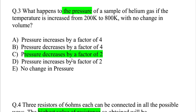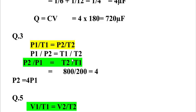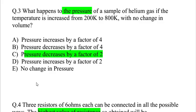The pressure increases from 200 Kelvin to 800 Kelvin. At constant volume, P1 over T1 equals P2 over T2. So P2 over P1 equals T2 over T1, which equals 800 over 200 equals 4. Therefore P2 equals 4P1. The pressure is increased by a factor of 4. This is our correct option.